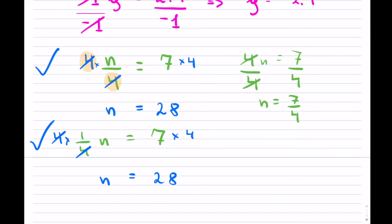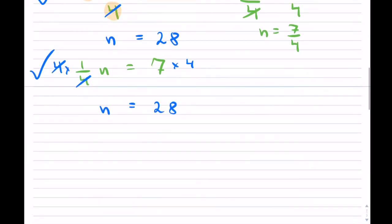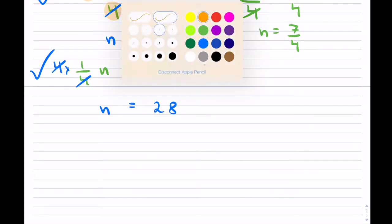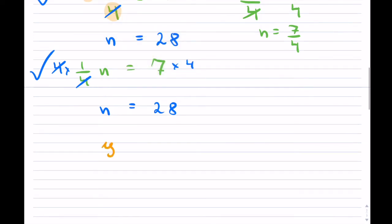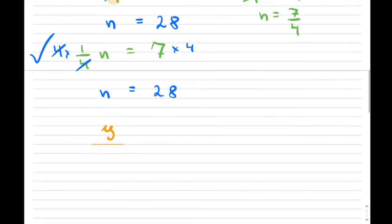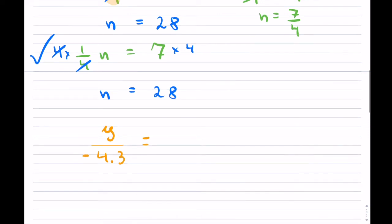Don't feel bad about it — you just have to slowly learn all these little nuances between equations. Does it change if the denominator is a decimal? No. For instance, if you had y over negative 4.3 equals some negative number, you still have a number in the denominator. The approach is the same: multiply both sides by that same number to get rid of it.